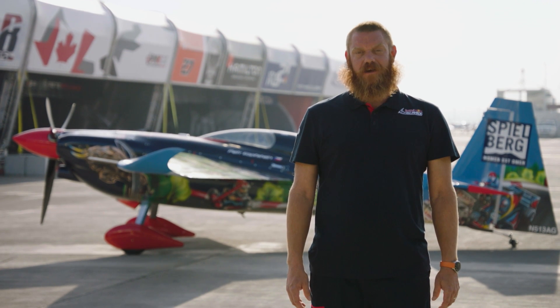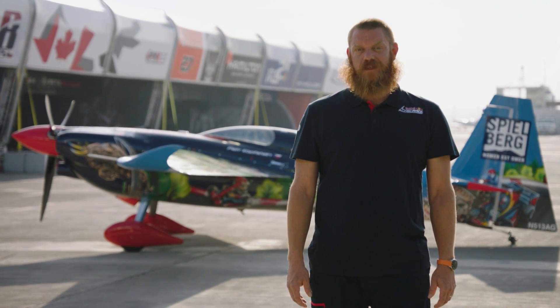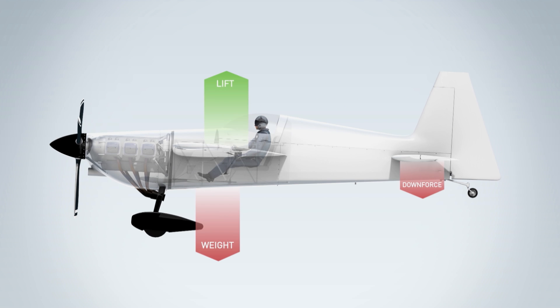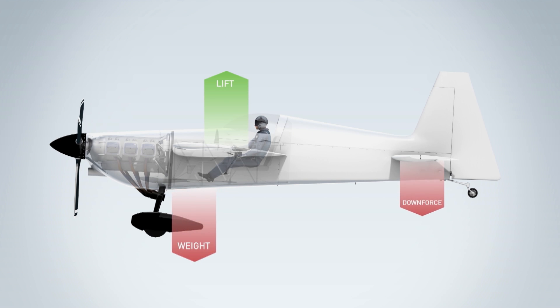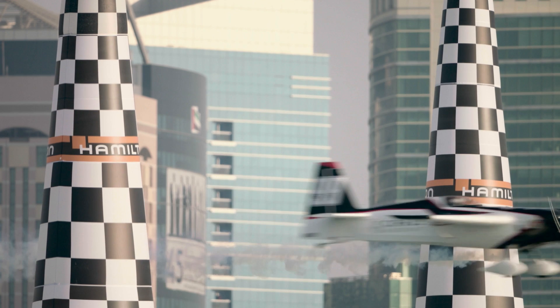Why would you want to do that, you ask? As we discussed earlier, the horizontal tail of the aircraft must make a downforce. This downforce is added to the weight of the plane, so it makes sense that if you shift the CG further aft, you won't have to make as much downforce with the tail to keep the aircraft in proper balance. Less downforce means less drag, and less drag means a faster airplane.